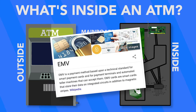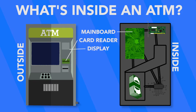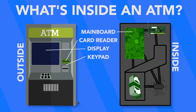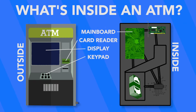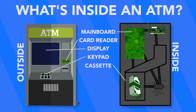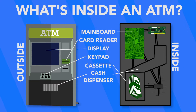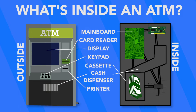The chip in the card reader creates a specific transaction code for each withdrawal or deposit. Then there's the display, the LCD screen that shows you what you're doing. Then there's the keypad, the main input of the ATM for secure information like the PIN and transaction amount. The cassette is the part that holds all of the cash in the ATM, and the cash dispenser is the part that moves the cash from the cassette to the tray.